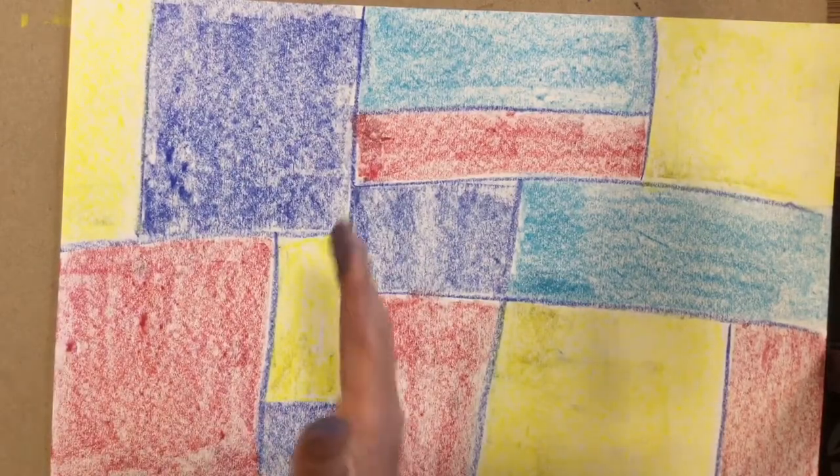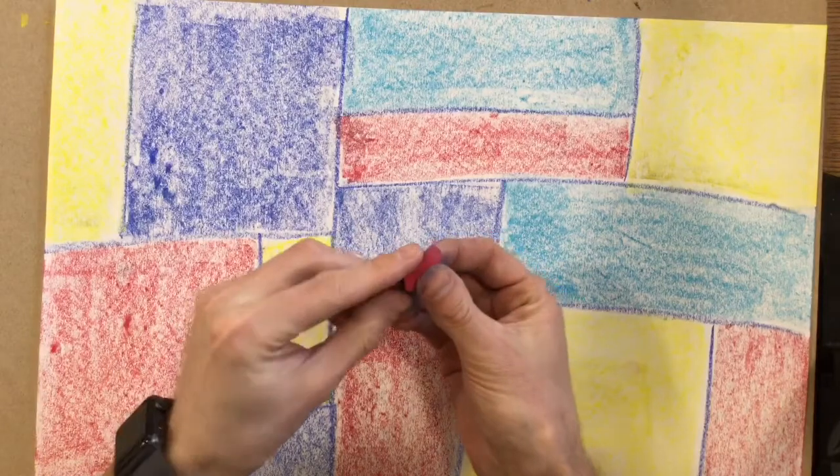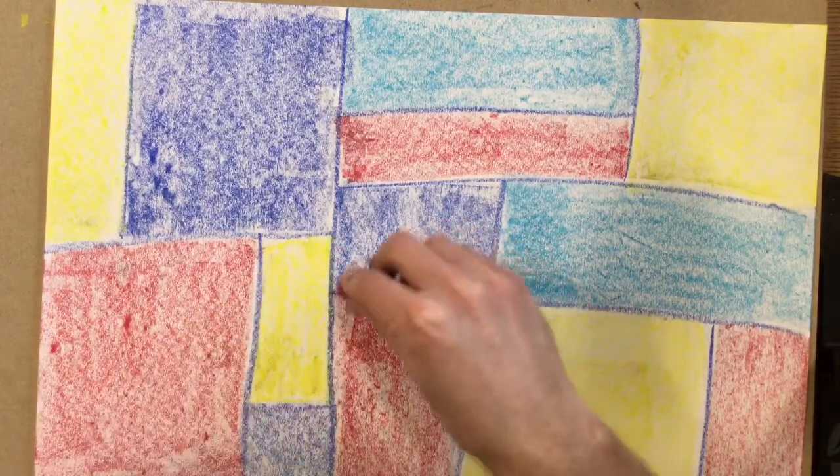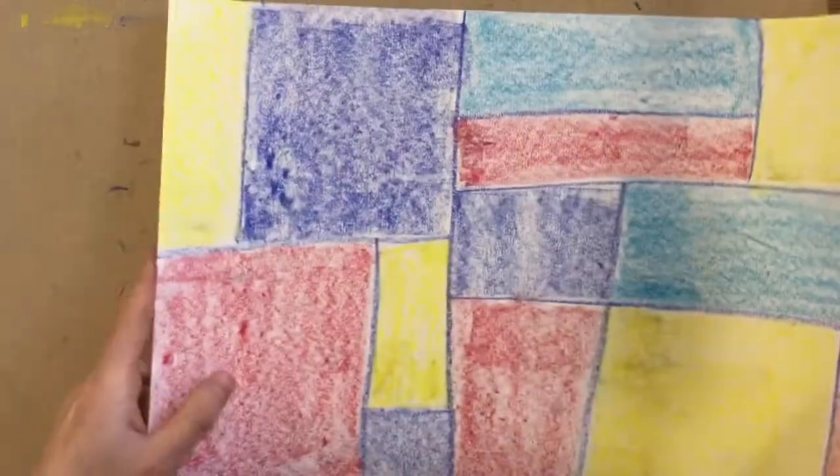After you have drawn those vertical and horizontal lines, you've used the side of the chalk to color in all of these squares. So I don't have any white left showing.